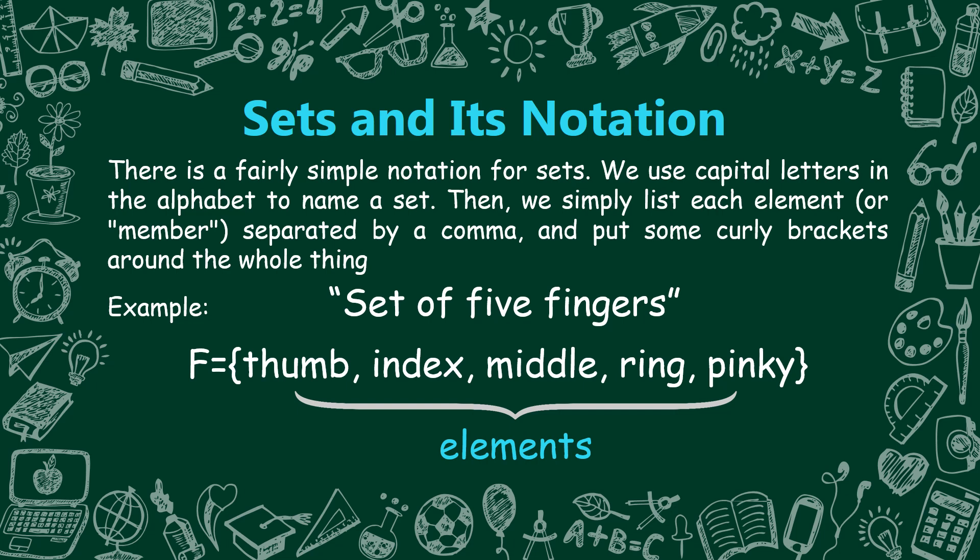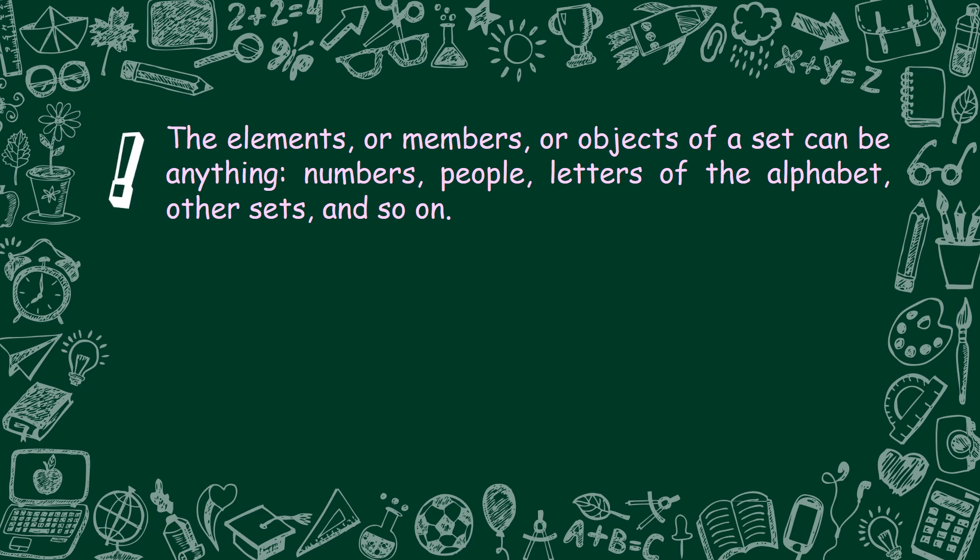We can use any capital letters in the alphabet. In writing the elements, it is important to separate each element with a comma — every after element, we should separate it by putting a comma. And last, we should enclose all the elements with a curly bracket — only curly brackets; parentheses or any other kinds of brackets are not allowed. Remember, the elements or members or objects of a set can be anything: numbers, people, letters of the alphabet, other sets, and so on.